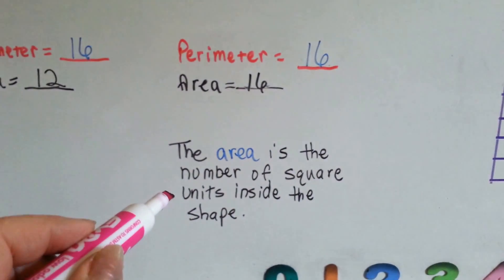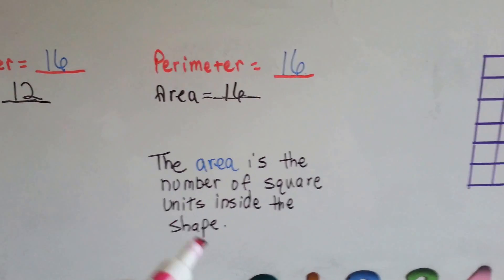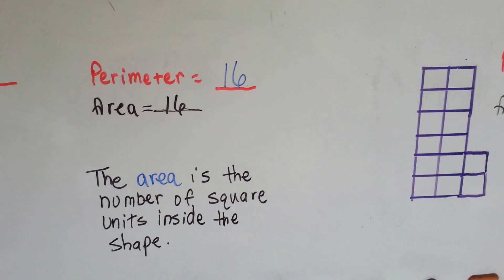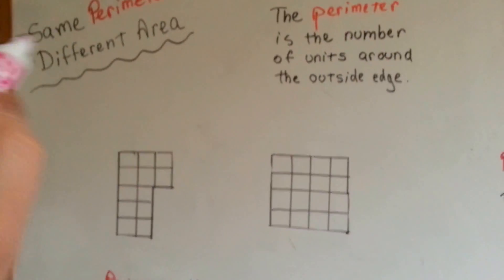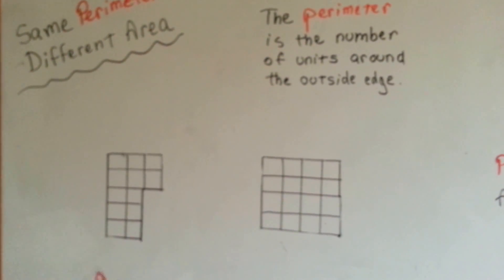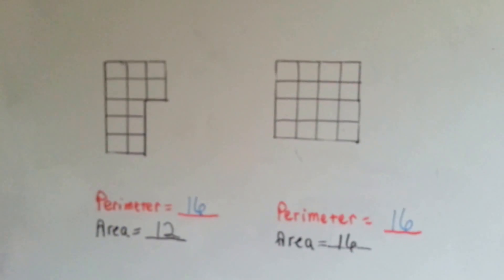Whereas the area is the number of square units inside the shape. So we're going to show that you could have the same perimeter in two different shapes that have different area.